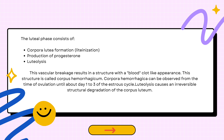Vascular breakage results in a structure with a blood clot-like appearance. This structure is called the corpus hemorrhagicum. Corpora hemorrhagica can be observed from the time of ovulation until about day 1-3 of the estrous cycle. Luteolysis causes an irreversible structural degradation of the corpus luteum.